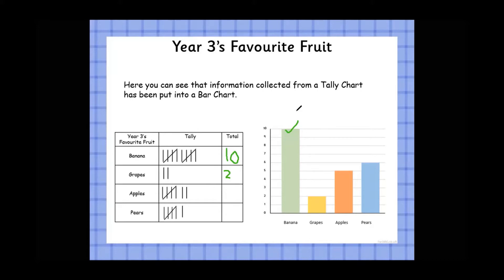Okay, let's have a look. We have 5 apples in the tally, but the bar chart shows 5 — so we need 2 more, making it go up to 7. And for pears, we have 6 in the tally, and on our bar chart we also have 6. Well done if you managed to spot the mistake on the bar chart!